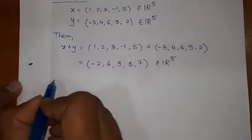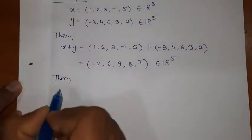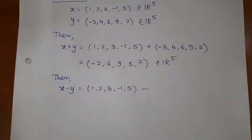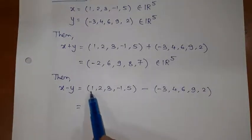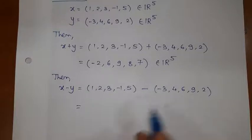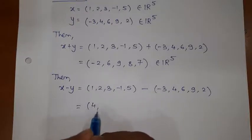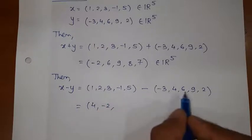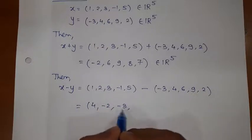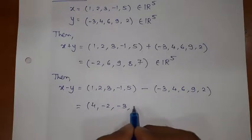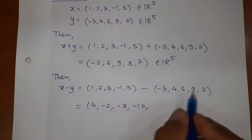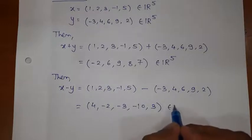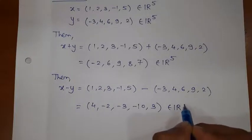Let us find out subtraction also. I am going to calculate X minus Y. I will subtract component-wise: 1 minus -3, that means plus 4; 2 minus 4, -2; 3 minus 6, -3; -1 minus 9, -10; 5 minus 2, 3. This is the required answer and again it is an element of R^5.